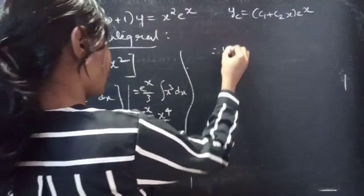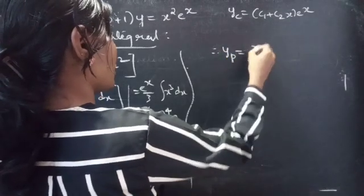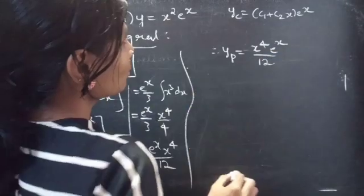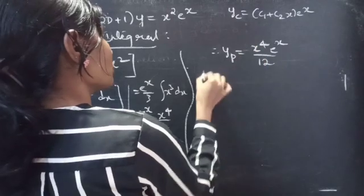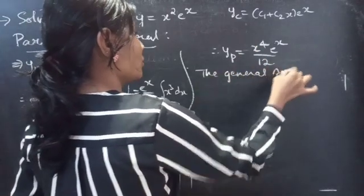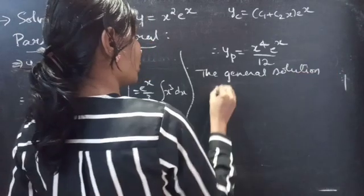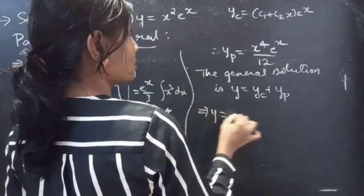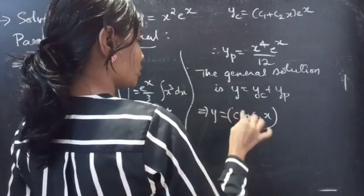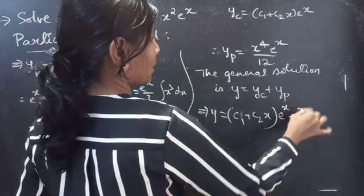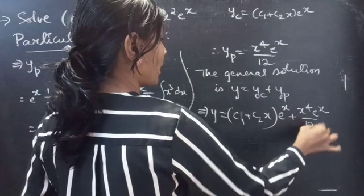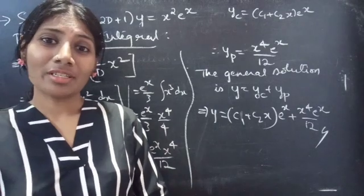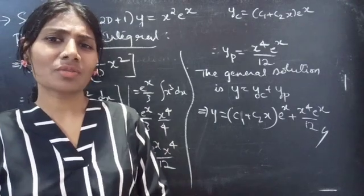Now we have yc and yp. The general solution is given by y = yc + yp. Therefore, y = (c₁ + c₂x)eˣ + x⁴eˣ/12. This completes the problem. We have seen a problem from higher order linear differential equations in this video. Hope you understand. We will see you in the next video. Until then, bye-bye.